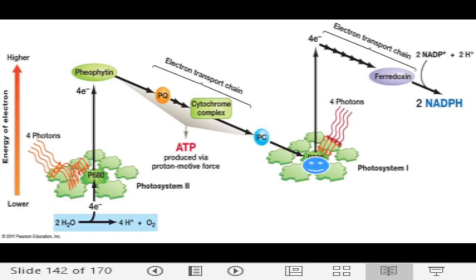Just like in photosystem II, photosystem I receives energy from photons, which are transferred from one pigment molecule to the next until all energy reaches P700. The electrons of P700 get excited, raised to a higher energy level, and are picked up by an electron acceptor molecule called ferredoxin. Ferredoxin then reacts with NADP; NADP is reduced to NADPH while ferredoxin is oxidized. The products of this reaction are ATP and NADPH, which will power the Calvin cycle. This process is called non-cyclic photophosphorylation.